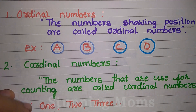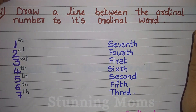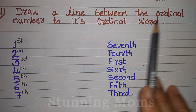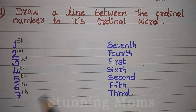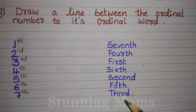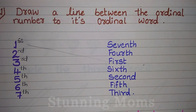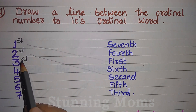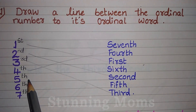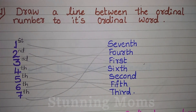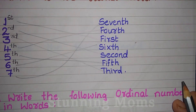This is easy to do. First, the ordinal and cardinal introduction will be done. Draw a line between the ordinal number and its ordinal word. Here I have written the ordinal number and there the ordinal word. First — where is the first? You have to draw a line. Second, third, fourth, fifth, sixth, seventh — like that only.